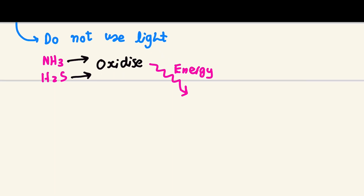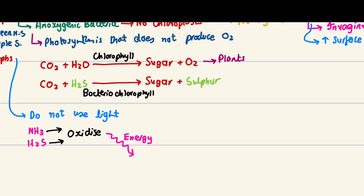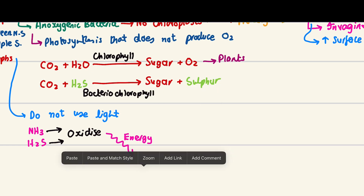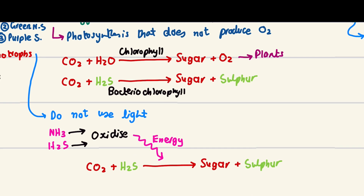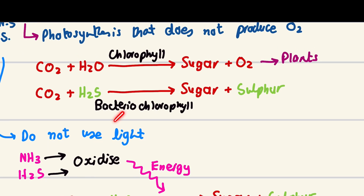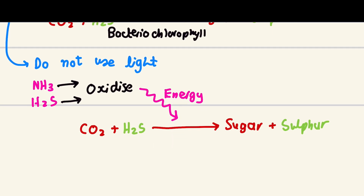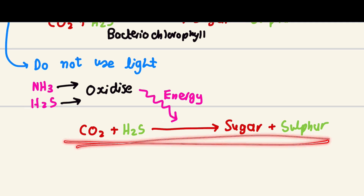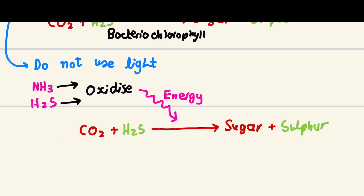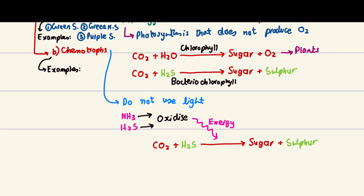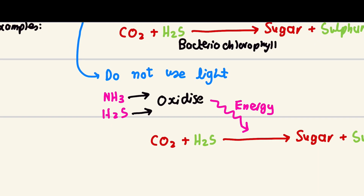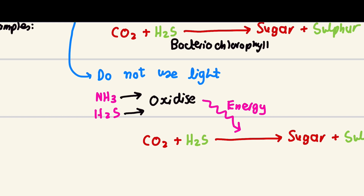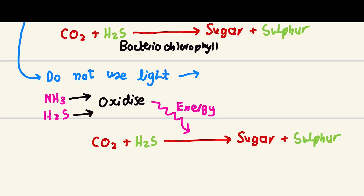This released energy is then used to drive the same equation as photosynthesis — producing organic matter from inorganic matter. The difference is that phototrophs use light energy (photons), while chemo-autotrophs use energy from oxidation of NH₃ or hydrogen sulfide. This process is not called photosynthesis.